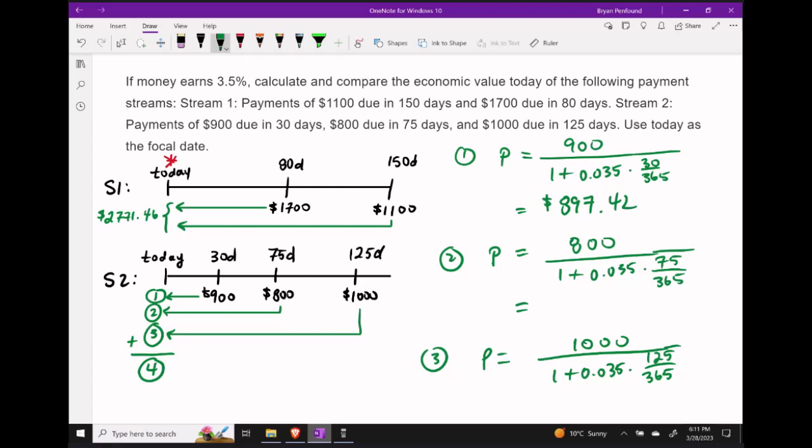Next, the present value or principal amount of our $800 is $794.29. And finally, for our $1,000 payment, we're looking at $988.16.